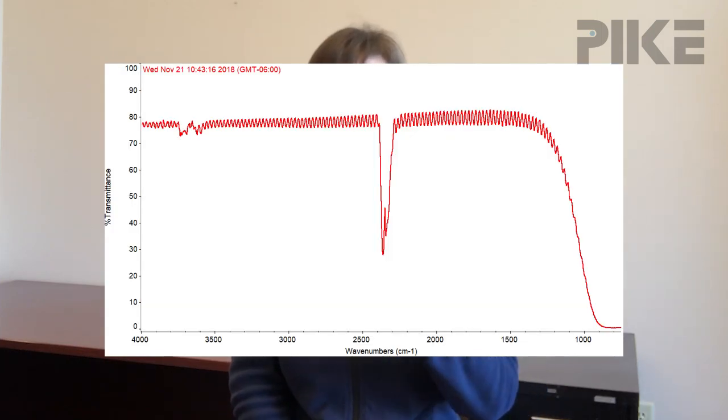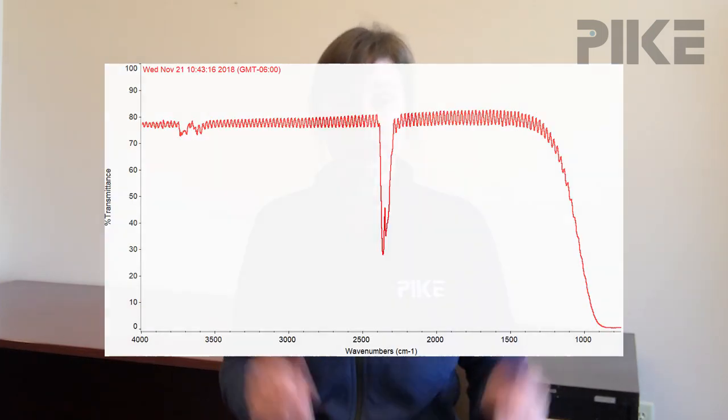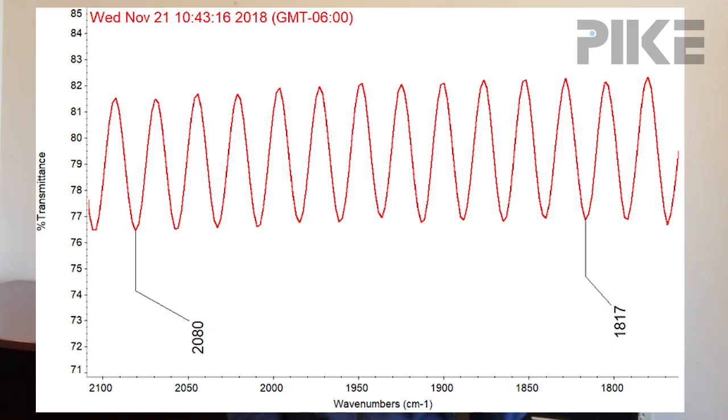You'll see a little fringing pattern throughout the spectrum, and from that fringe pattern we can go ahead and calculate the path length. So step two, you're going to zoom in on a section of that fringing pattern. We're going to take two points within that sinusoidal wave and count the number of fringes in between. In this case, my first point is 2080 wavenumber, and if I count the number of fringes all the way down to 1870 wavenumber, that's 11 fringes.